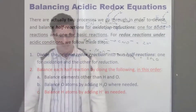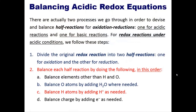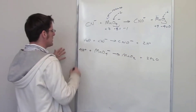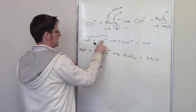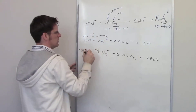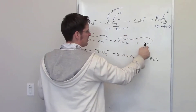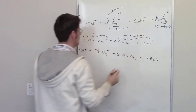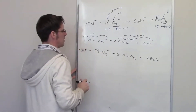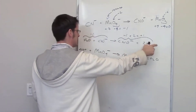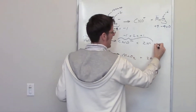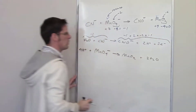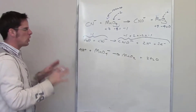The next step says balance charges by adding electrons as needed. In the reduction half reaction, the left side has a charge of negative one. The right side has MnO₂ (neutral) plus two H⁺, giving plus one, plus... wait — actually there's a negative one from MnO₄⁻ contribution. Let me work through: left is negative one, right is negative one plus two H⁺ = plus one. I add two electrons to the right to bring it to negative one. Charges are now balanced.